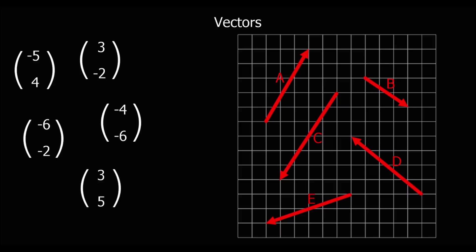In this video we're looking at vectors. We've got some column vectors here — five different column vectors — and five different vectors drawn on the grid, and we're going to match the column vectors to the vectors on the grid.